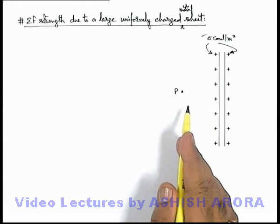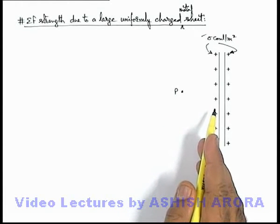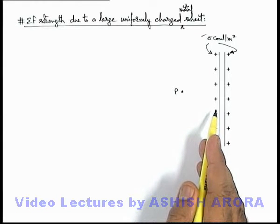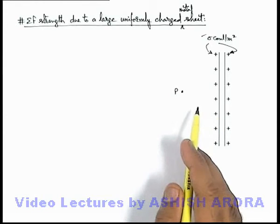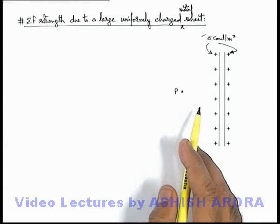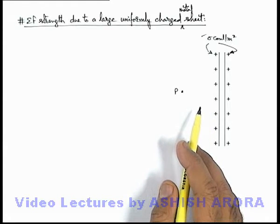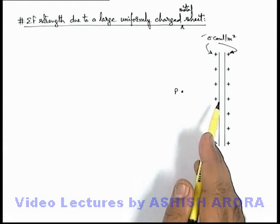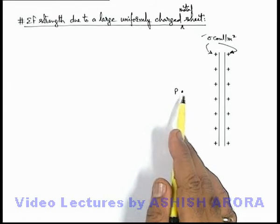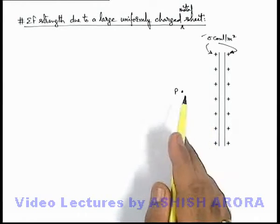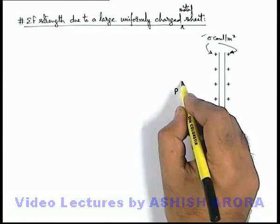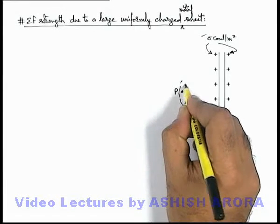If we wish to use the Gauss law, we need to consider a Gaussian surface in such a way that at every point, electric field is either normal or parallel uniform, and as well as it'll pass through point P. So similar to the previous situation, here we consider a cylindrical Gaussian surface.